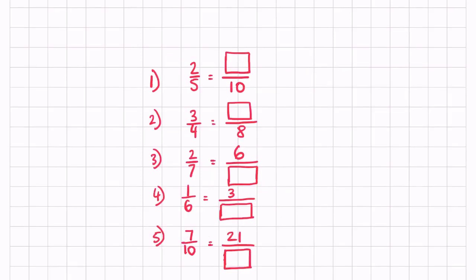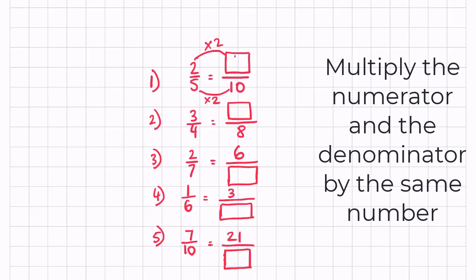Let's have a look at these questions. Now over here we have 2 fifths and we are finding the missing number. First of all we need to find out what number 5 has been multiplied by to get to 10. So we can see 5 times 2 is 10, or 10 divided by 5 is 2. So we need to multiply the numerator by 2 as well. So 2 times 2 is 4.